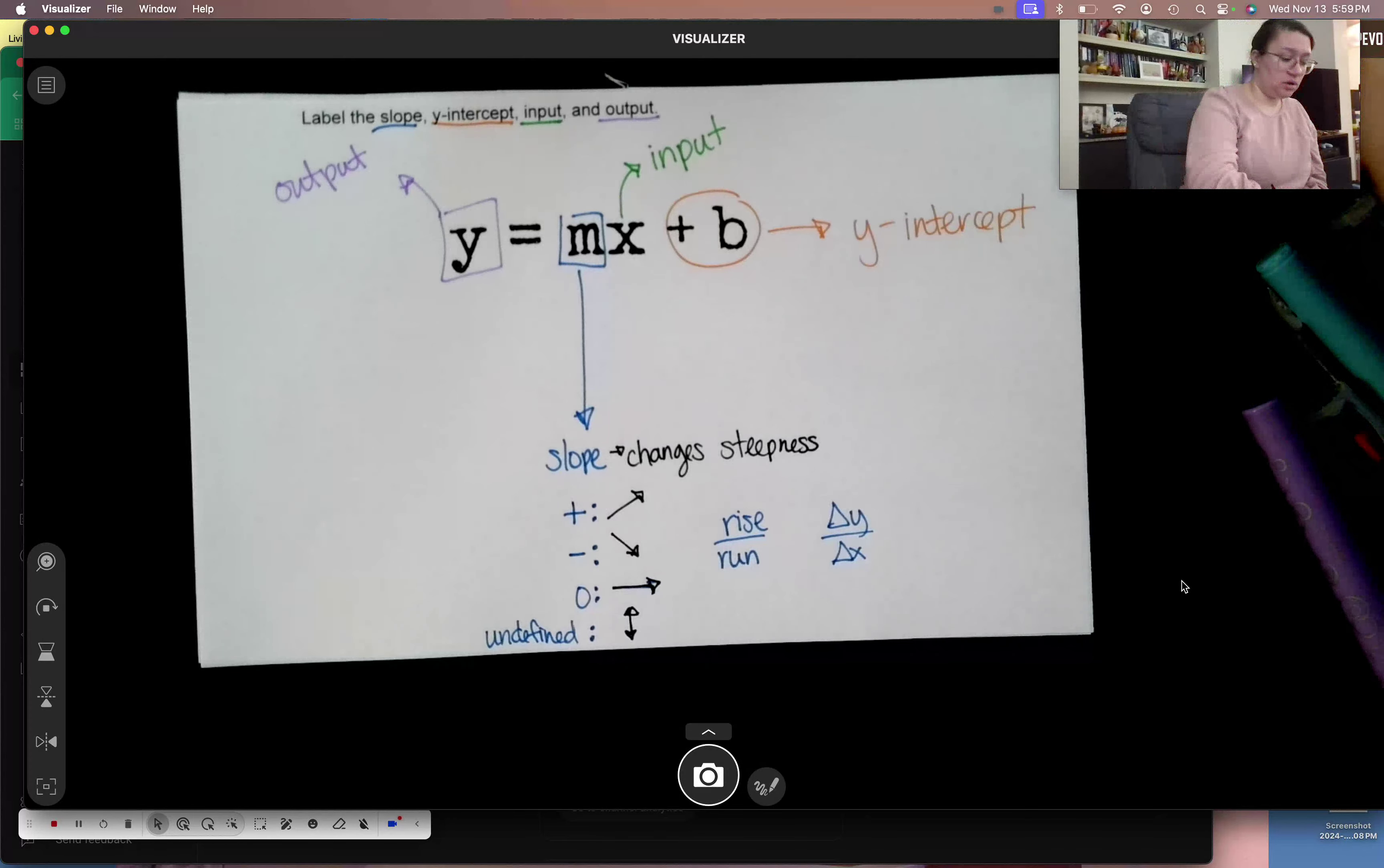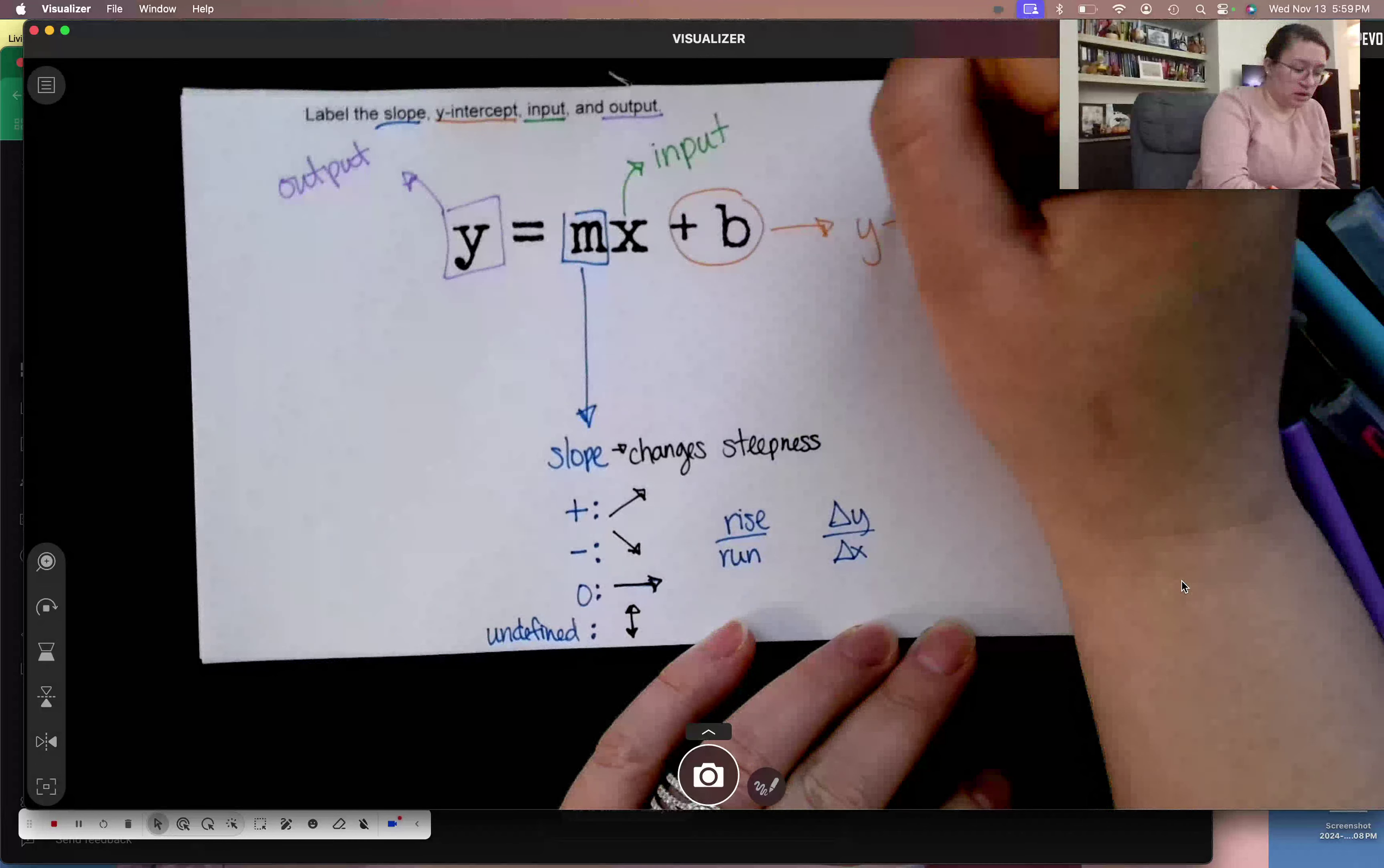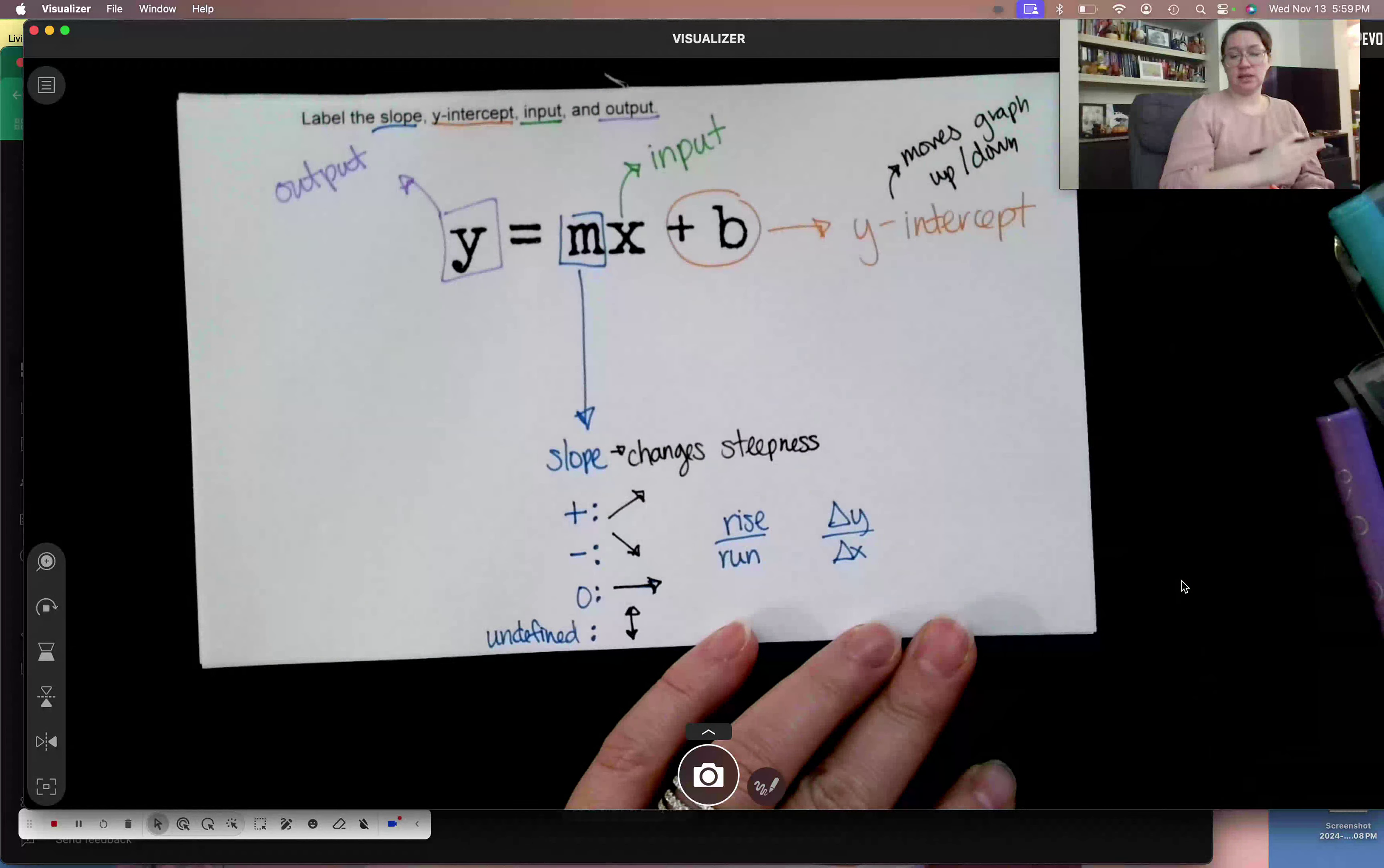Then the y-intercept. What does the y-intercept change about your graph? If your y-intercept moves the graph up or down, makes it slide up, makes it slide down.